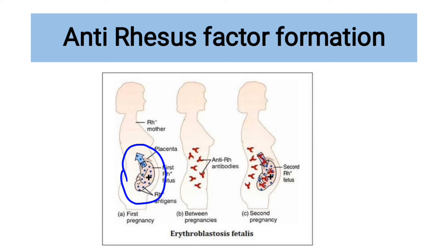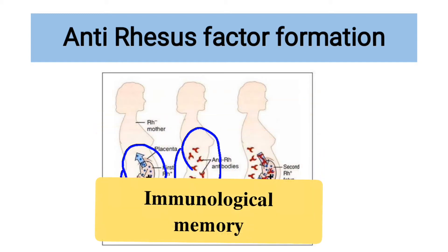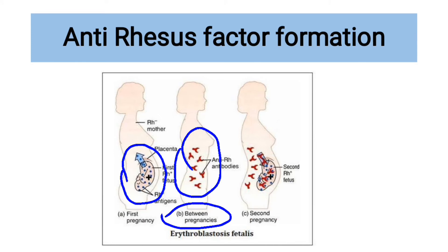Hence, the baby may be born alive. As time goes by, in between pregnancies, the mother has given birth to the young one, and there are some antibodies which were produced during that pregnancy. The process of antibody production by the immune system of the mother will still continue, and these antibodies are stored in what we call immunological memory. Every individual has an immunological memory whereby the antibodies are stored, so that next time the body encounters another antigen of the same kind, the antibodies are already in the immune system. So between pregnancies, the antibodies are still being produced within the mother's circulation.